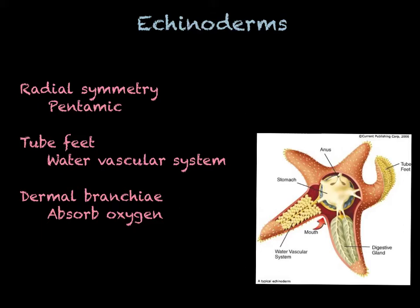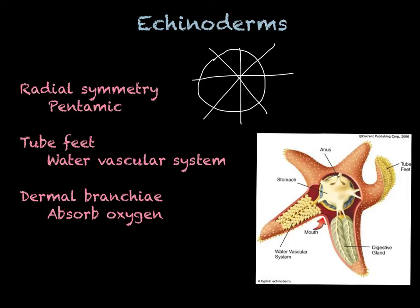All echinoderms have a couple things in common. The first thing is radial symmetry. Radial symmetry means that the organism can be cut in any which way, and two equal halves will be provided. In the case of echinoderms, many times that symmetry is pentamic — penta means five, so the body seems to be divided into five equal parts.